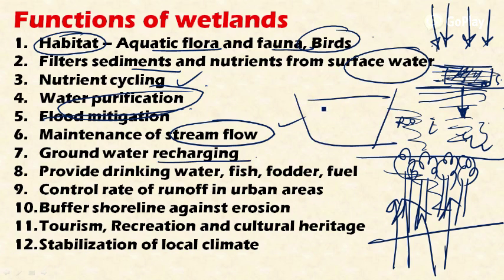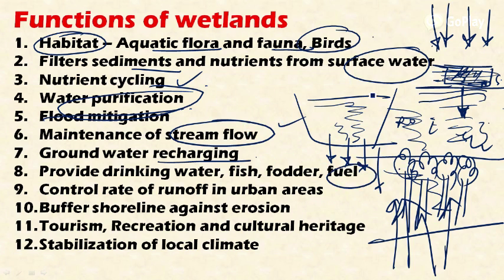Wetlands also help in groundwater recharge because water stagnates in them and percolates into the groundwater. They provide drinking water, fish, and fuel to adjacent communities. They also help control the rate of runoff in urban areas and act as a buffer against shoreline erosion.